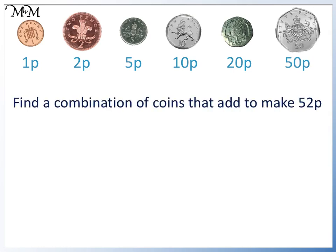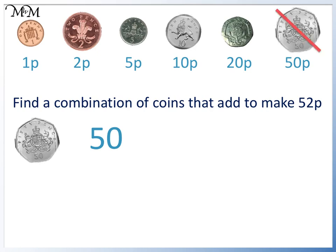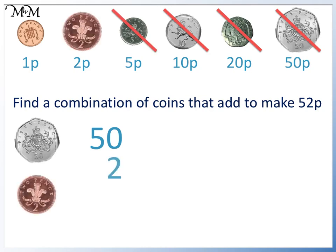Find a combination of coins that add to make 52p. We start by adding the largest value coins first. We take 50p. We have 50 and need to make 52, so we need to add 2 more. We can't add another 50p, 20p, 10p or 5p because they are too big. We can take 2p. Adding these coins: 0 plus 2 equals 2, and we have 5 in the tens column. 50p plus 2p is 52 pence.